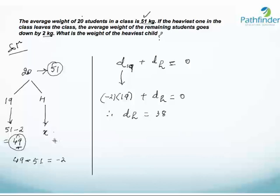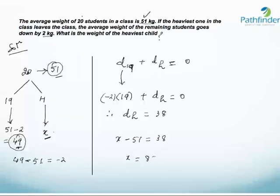Now we calculate the deviation on the heaviest student as x minus the overall average of 51, which must equal 38. Solving for x gives the weight of the heaviest student as 51 plus 38, that is 89 kg. Once again, we were able to answer this question without having to write elaborate equations or engage in major calculations.